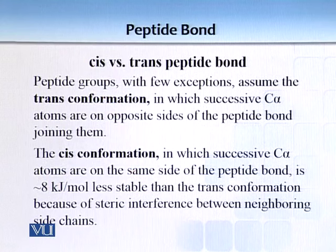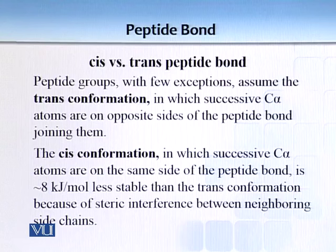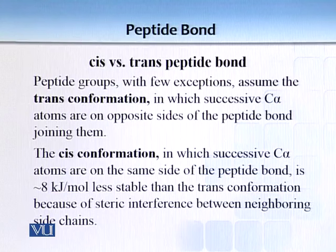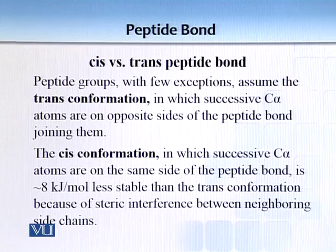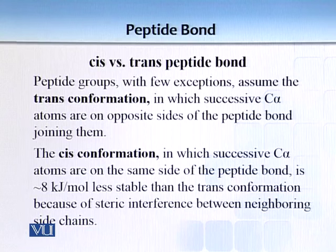Considering cis versus trans peptide bonds: any bond tries to go toward greater stability, and the trans conformation provides that stability because the C-alpha atoms are on opposite sides of the peptide bond. The cis conformation, where successive C-alpha atoms are on the same side, is around 8 kilojoules per mole less stable than the trans conformation, due to steric interference between neighboring side chains.